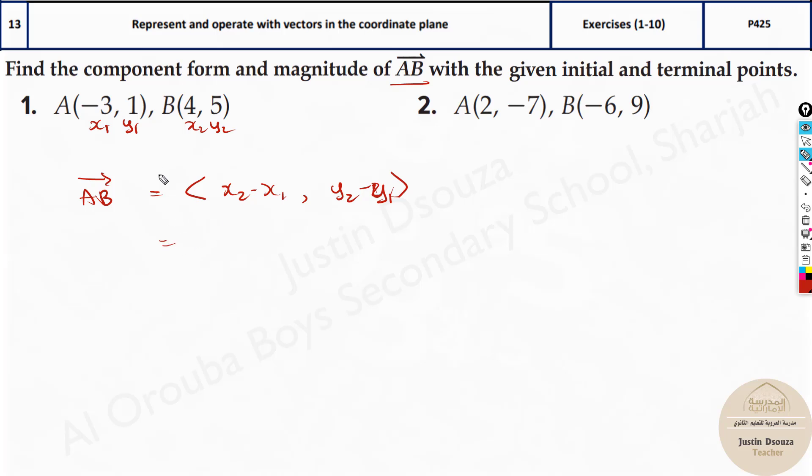Now let us substitute. We have x2 as 4 minus negative 3 and for y2 we have 5 minus y1 is 1. And the answer we can be easily computed, it will be 4 plus 3 that is 7 and 4. This is the component form.